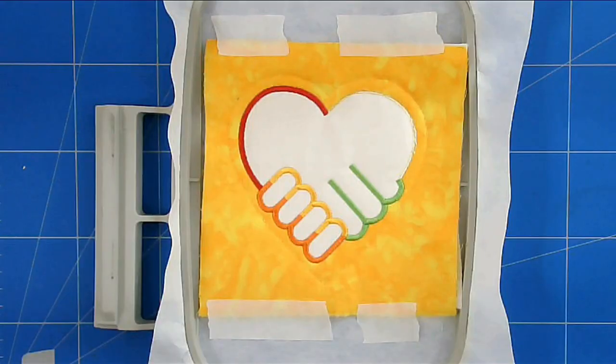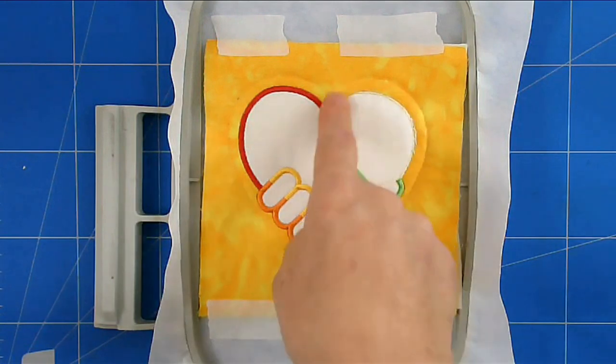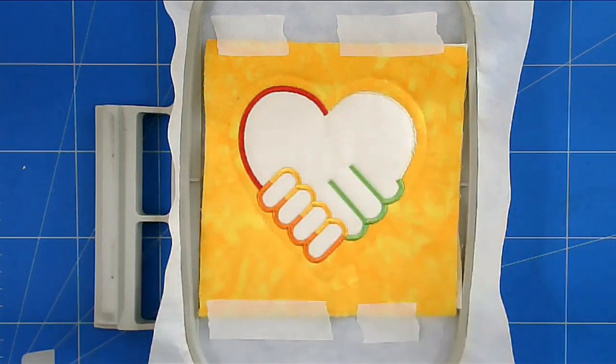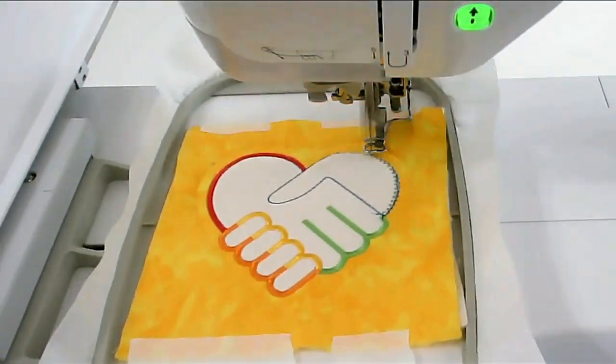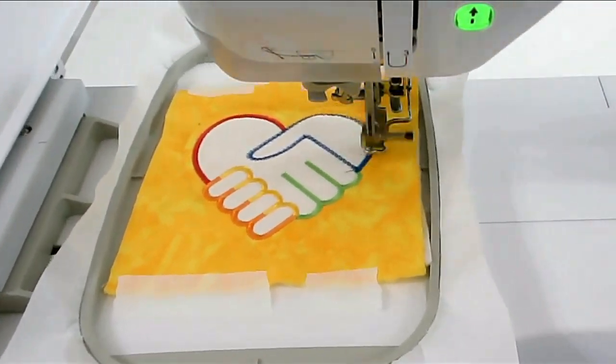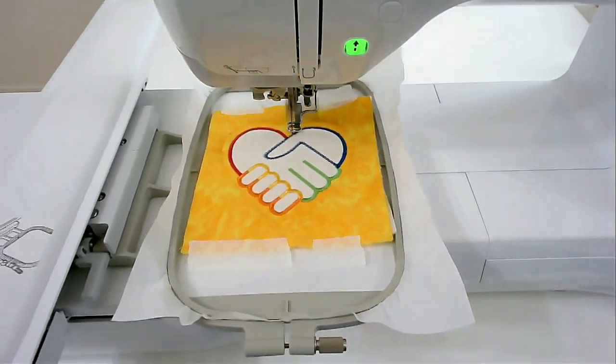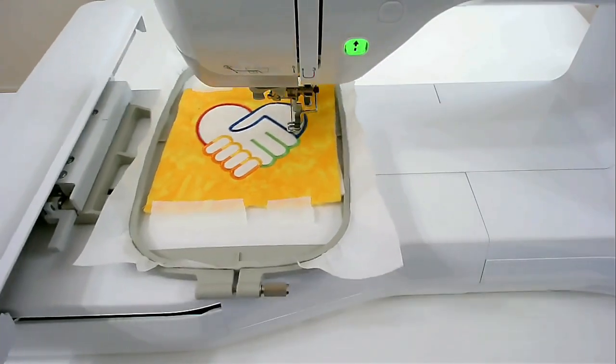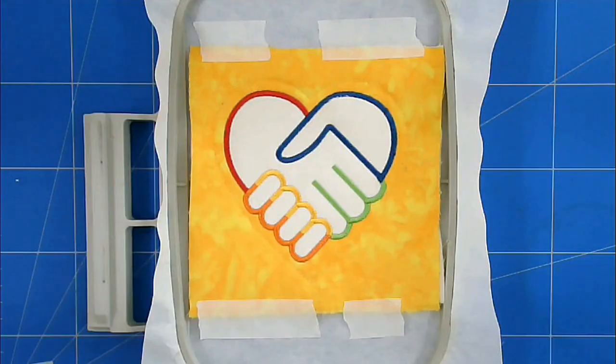I've changed my thread to blue and next I'm going to stitch round eight and that's going to stitch the thumb that comes around here. I've changed my thread to purple and I'm going to stitch round number nine which is the wording piece. If you don't want to do the wording then you can skip this round.